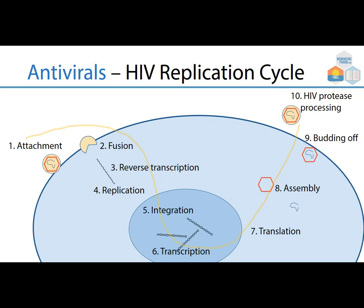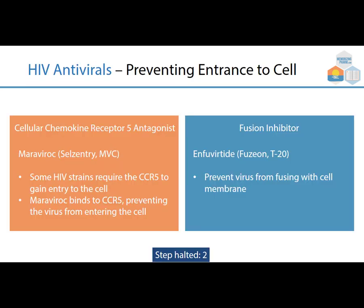What we want to look at is what step each drug stops. Cellular chemokine receptor 5 (CCR5) antagonists, like maraviroc, block cell entry — some HIV strains require the CCR5 receptor to gain entry, and maraviroc binds to CCR5, preventing the virus from entering the cell. On the other end, the fusion inhibitor enfuvirtide prevents the virus from fusing with the cell membrane, halting step 2.